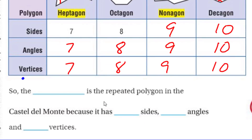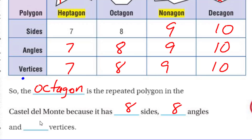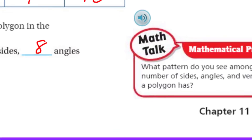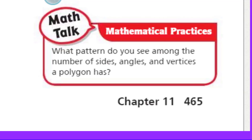The blank is the repeated polygon in the Castel del Monte. We already decided: the octagon — because it had eight sides. It has eight sides, eight angles, and eight vertices. And the pattern we see among sides, angles, and vertices? They're the same. A polygon has the same number of sides, the same number of angles, and the same number of vertices. Super easy.